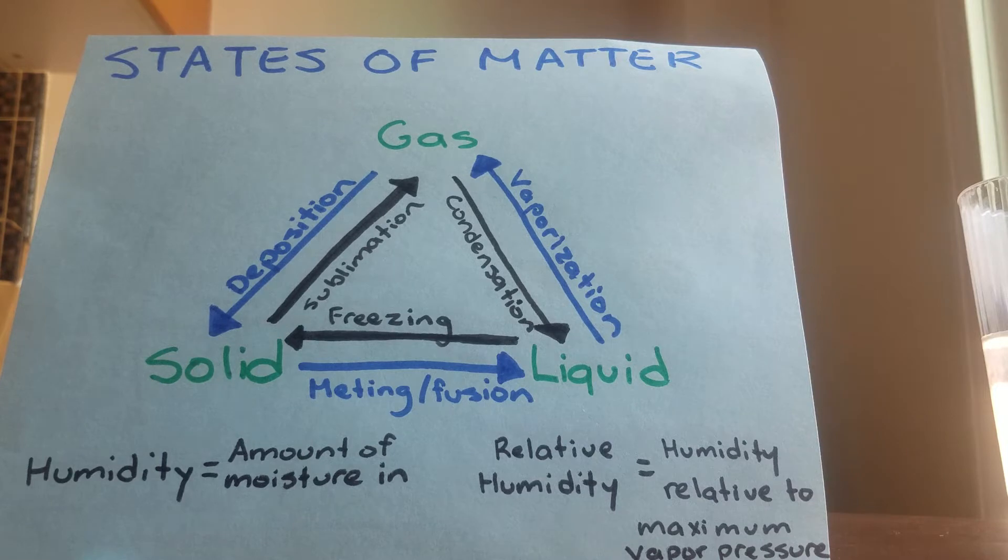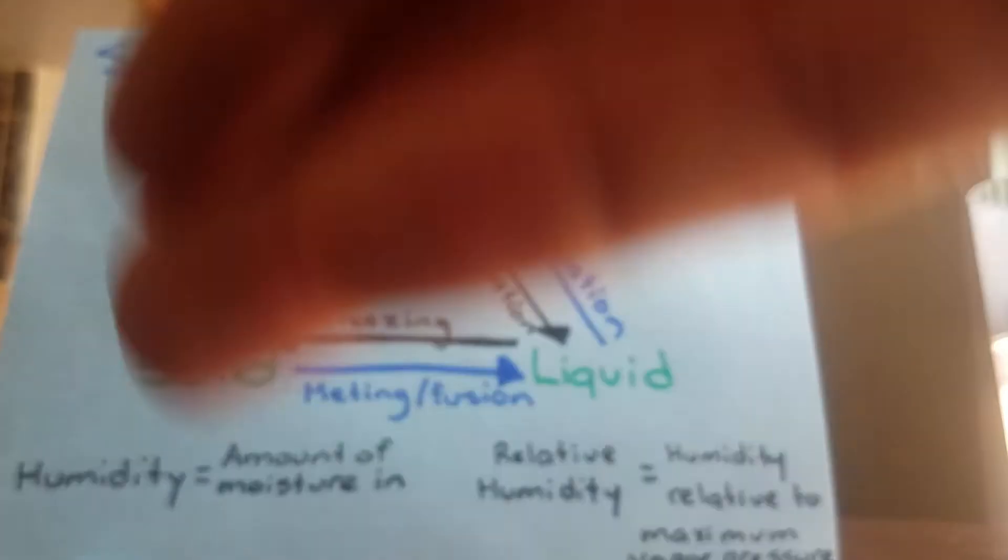Okay, solids to gas, like deposition, is pretty rare, not really relevant to the water cycle, but this is called sublimation. And then gas to a liquid is called condensation. Cooler temperatures introduced to gas particles is going to convert that gas back into a liquid.